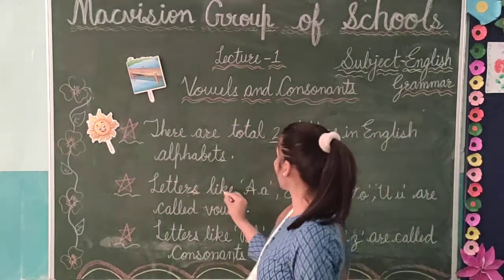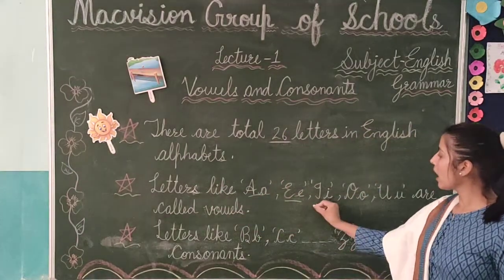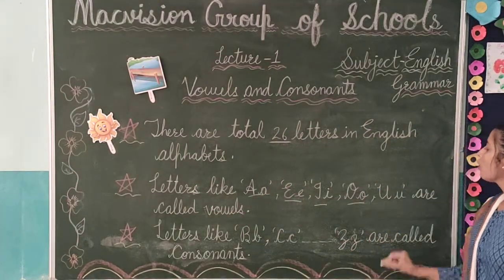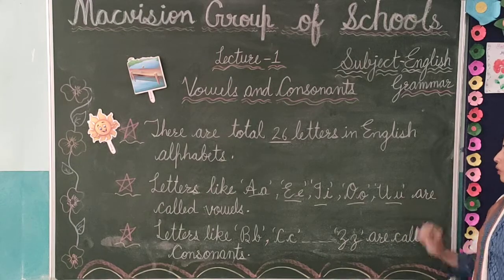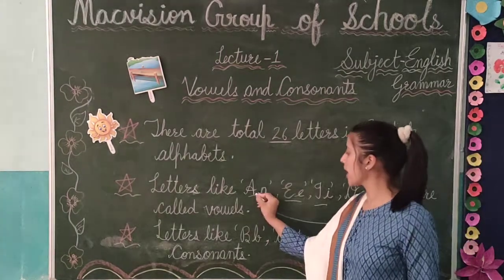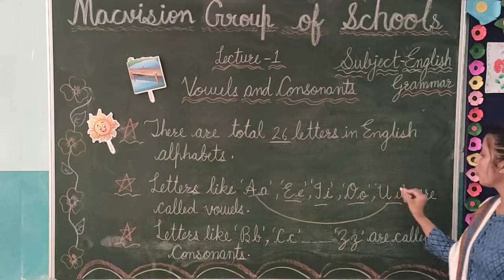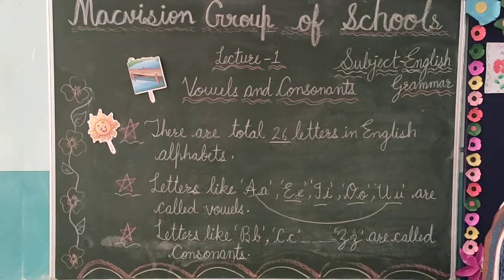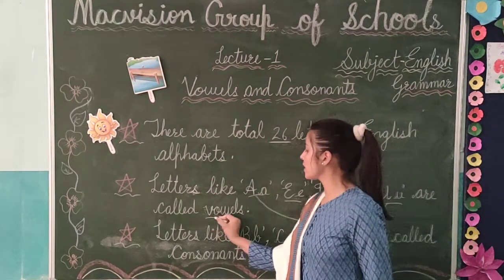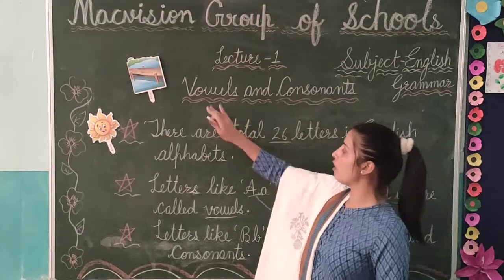Letters like A, E, I, O, U — these are our five alphabets. A, E, I, O, U. This is what we call vowels.